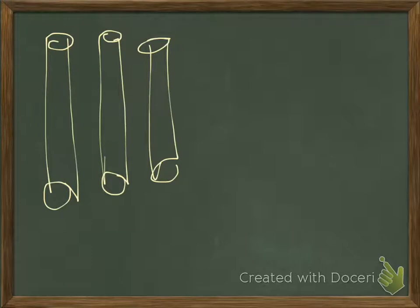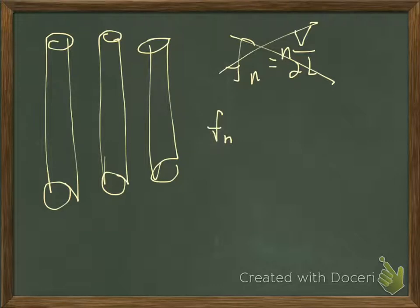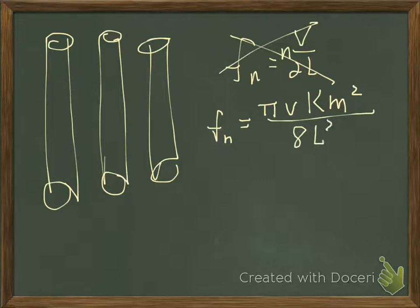The calculations below, the formula below, pretty much all comes from his work. So for a struck pipe, rather than our simple fn equals n times v over 2L, that doesn't work. So f sub n is actually equal to pi times the velocity of the sound in that material times k, which is a constant for a given material that you can calculate, m squared, divided by 8 L squared.